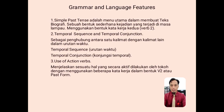Number three: use of action verbs. Biography uses action verbs — verbs that indicate active actions performed by the subject. These describe things actively done by the subject, using verb form two or the past form. For example: 'go' becomes 'went,' 'sing' becomes 'sang.' Those are the language features of biography text.